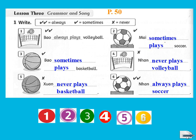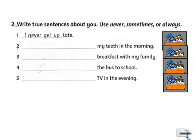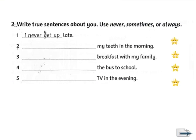Now, exercise 2. Write 2 sentences about you. Use never, sometimes, or always. Now you are asked to write sentences about yourself, using frequency adverbs — never, sometimes, or always — to complete sentences 1 through 5.